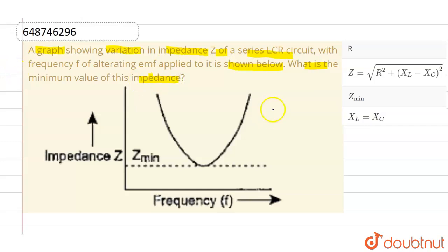Now as we know that the impedance is given by Z equals to root over R square plus XL minus XC whole square. This is the value of Z.